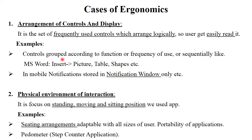Controls are grouped according to function, frequency of use, or sequentially. Another example is mobile notifications — all notifications are stored in the notification window only. This is the concept of ergonomics so users can easily read and access them. The next case is the physical environment of interaction.